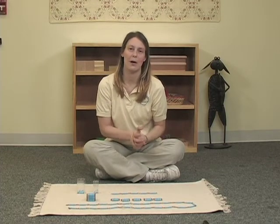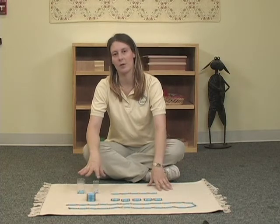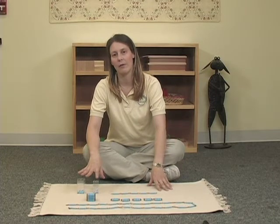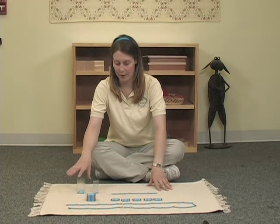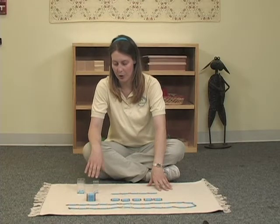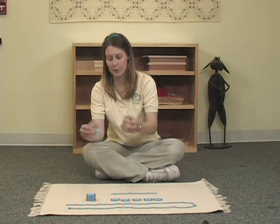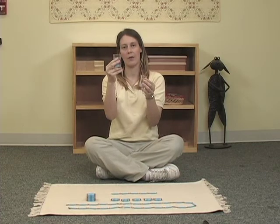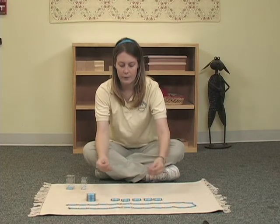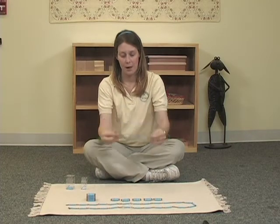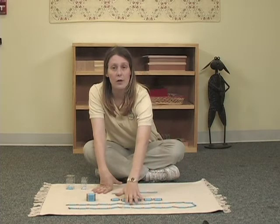The materials required for this lesson: what we have in front of here are the basic materials for both the five squaring and cubing chain. The cabinet has both sets of tags, and the tags are normally housed in boxes like this. You have the larger box for the tags for the cubing chain and the smaller box for the squaring chain. Each bead cabinet has the squaring chain — this is the squaring chain for the five — and in front of us here is the cubing chain.